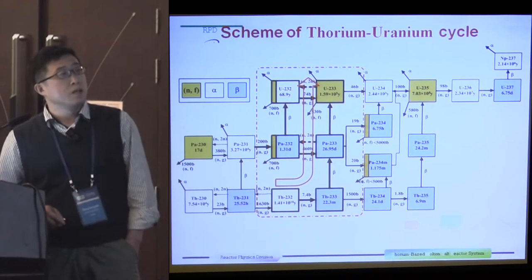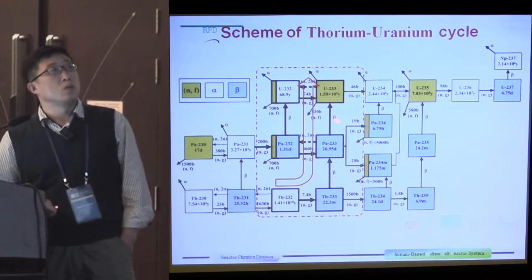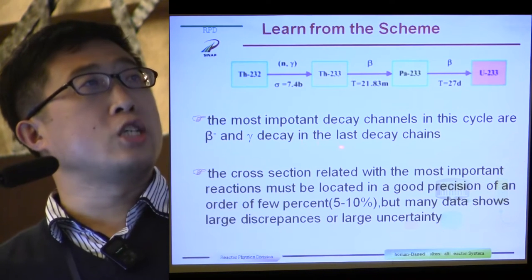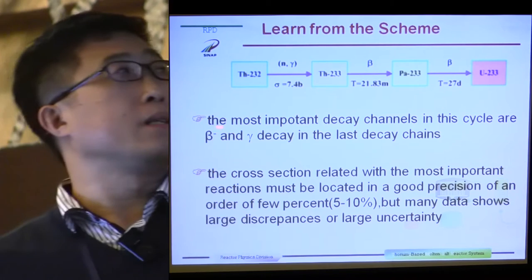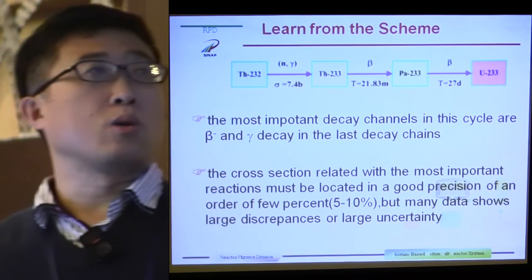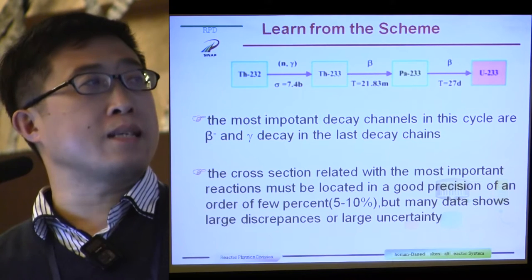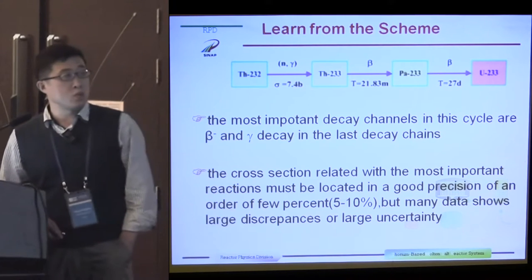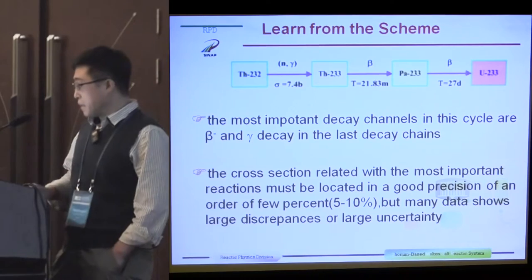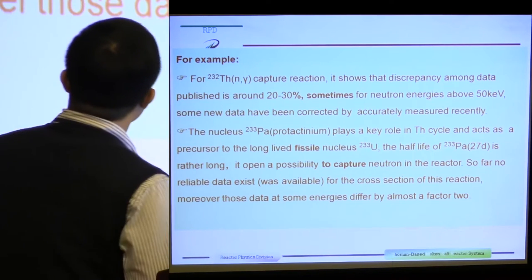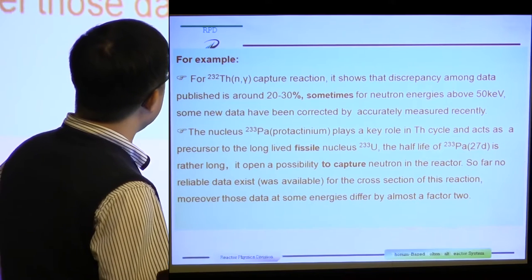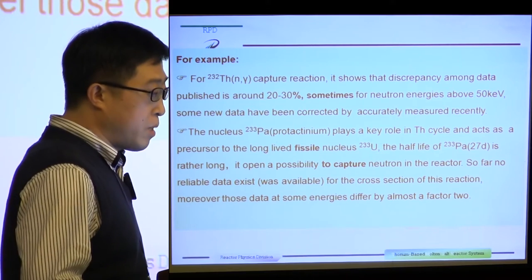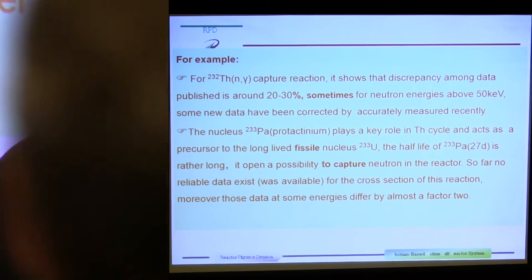Here is the main chain. From thorium-232 to uranium-233 is the main cycle. The most important channels in this cycle are beta decay and gamma decay. The cross-section related with the most important reactions must be located with good precision, in order of a few percent. But many data shows larger discrepancies or larger uncertainty. For example, for the thorium N-gamma capture reaction, the discrepancies among the published data is around 20% to 30%, sometimes for neutron energy above 50 keV.